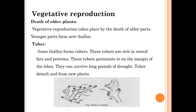Some thalli form tubers. These tubers are rich in stored fats and proteins. They germinate on the margin of the lobes and can survive long periods of drought. The tubers detach and form a new plant. The older part of the plant decays, and the remaining part has the ability to produce a new plant. Some outgrowths like tubers or buds also have the ability to produce a new plant.